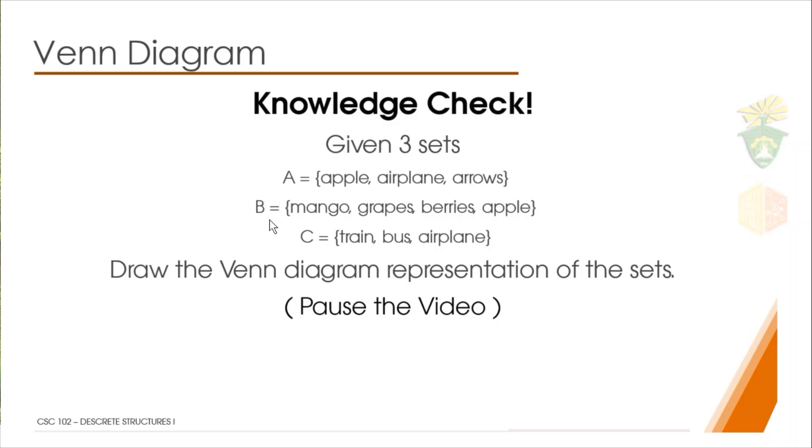We have set B, which is mango, grapes, berries, and apple, which is basically a set of fruit. And C contains train, bus, and airplane, which is a set of transportation devices. Now your job is to draw a Venn diagram representation of these sets. Use the prior knowledge that I just discussed in drawing the Venn diagram representation of these three sets.